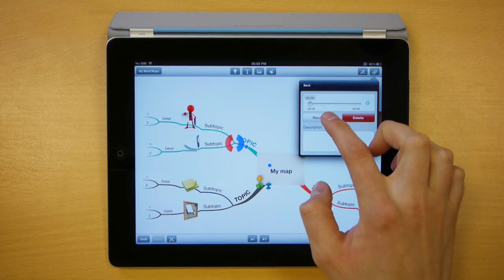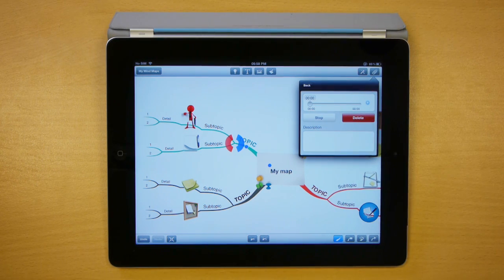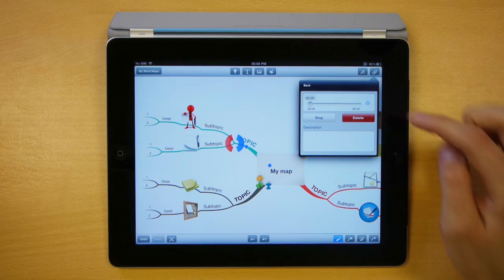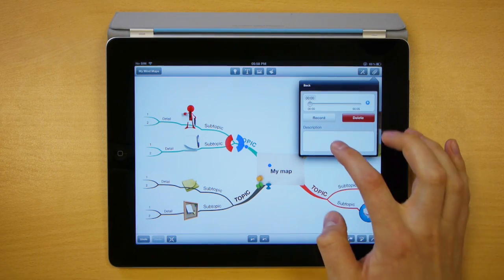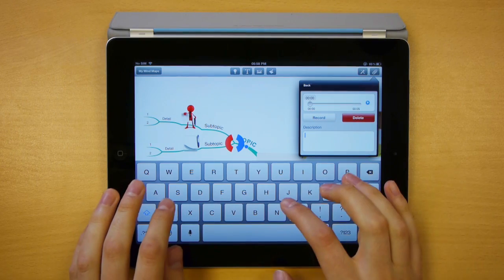You've got this screen and then press record to start the audio note recording. You can see the timer here. When you're finished, press stop and then you can give your audio note a description.